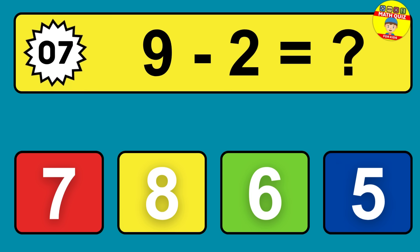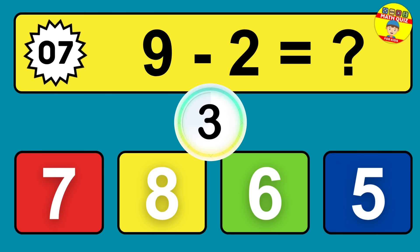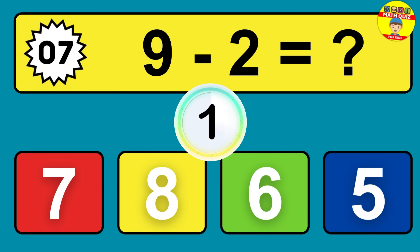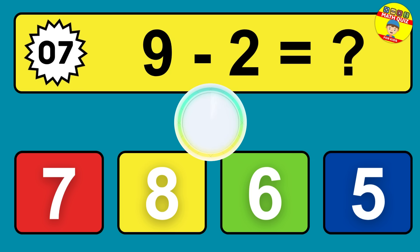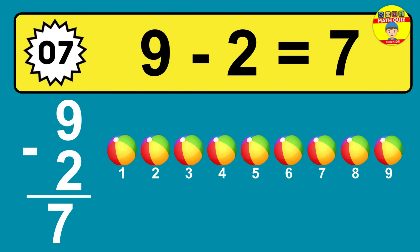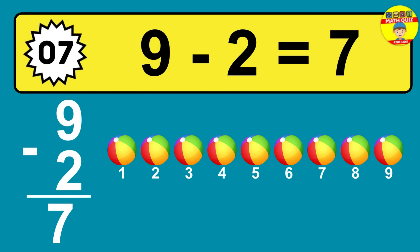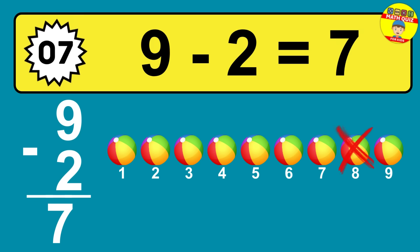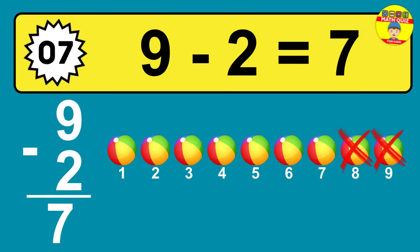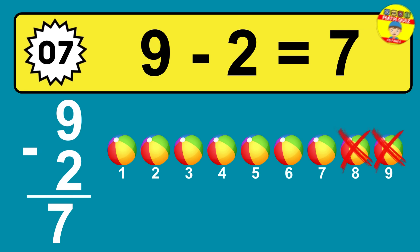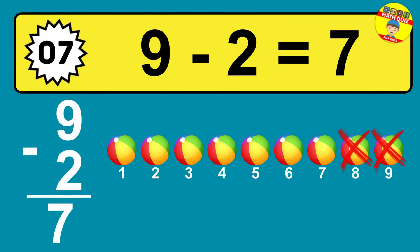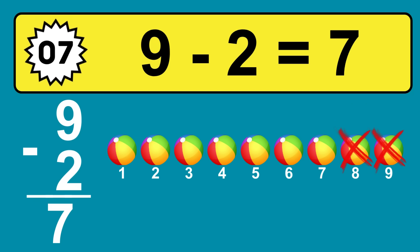Question 7: 9 minus 2 equals what? Let's count it: 1, 2, 3, 4, 5, 6, 7. So the answer is 9 minus 2 is 7.